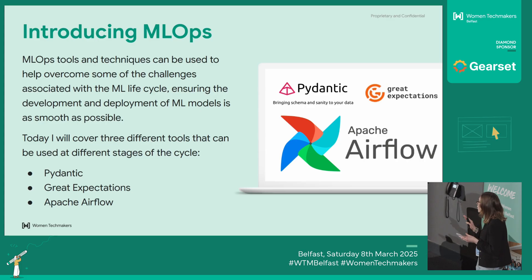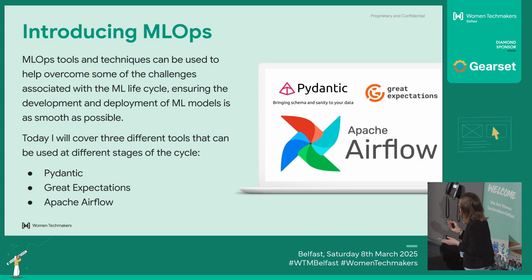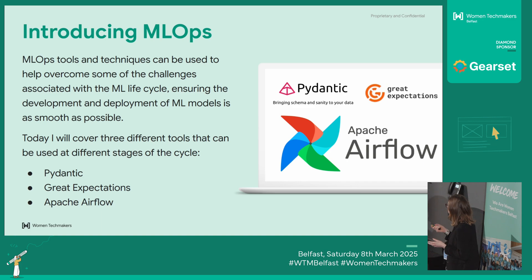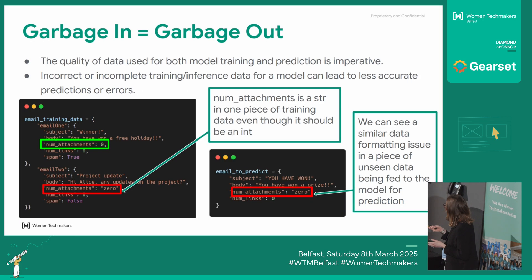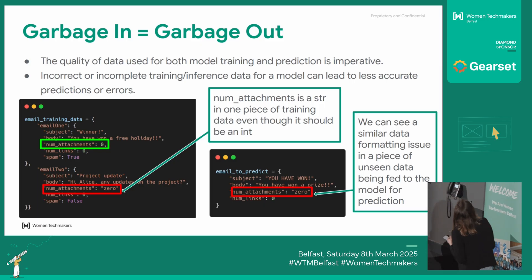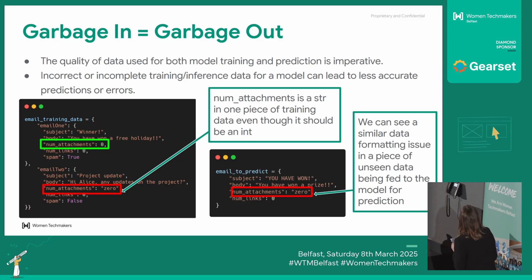I'm going to look at just three tools today: Pydantic is one, Great Expectations is another one, and then Apache Airflow. Starting off with Pydantic — this is a data validation tool, and data validation is very important in machine learning models.